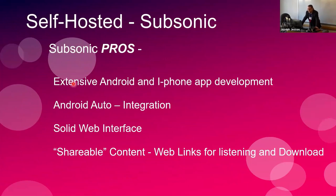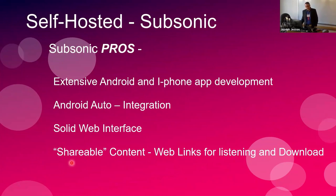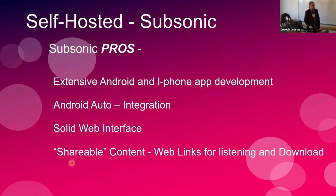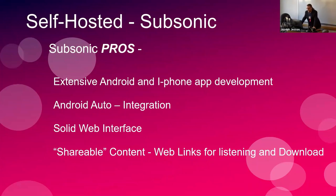The pros for Subsonic: there is extensive app development going on for it, there's direct Android Auto integration with most of the apps being developed, there's a fantastic solid web interface. Another nice feature is you can create a playlist and share it with anyone — it'll generate a custom URL you can just email. So if you've got a new album and want your friend in Germany to listen to it, you can send a link that brings up a one-time playlist on their screen.